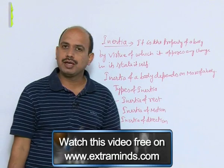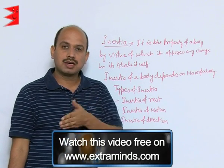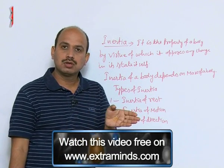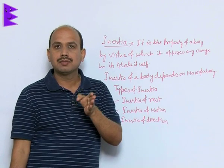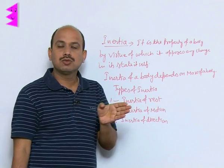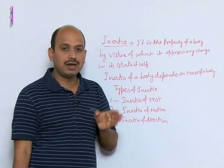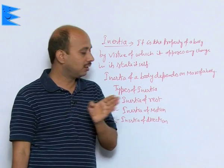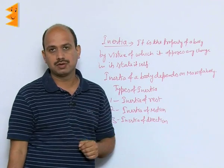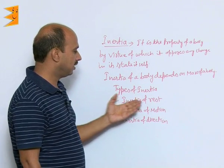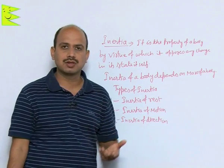Inertia of direction: suppose you are taking a turn on a curved road. Your tendency is to continue in a straight line, but as you take the turn, you try to go in a straight line and as a result you try to go away from the curve — away from the centre of the curve. These are all examples of inertia of rest, inertia of motion, and inertia of direction.